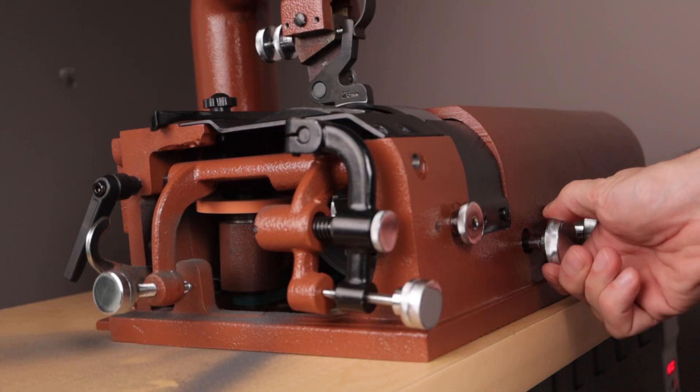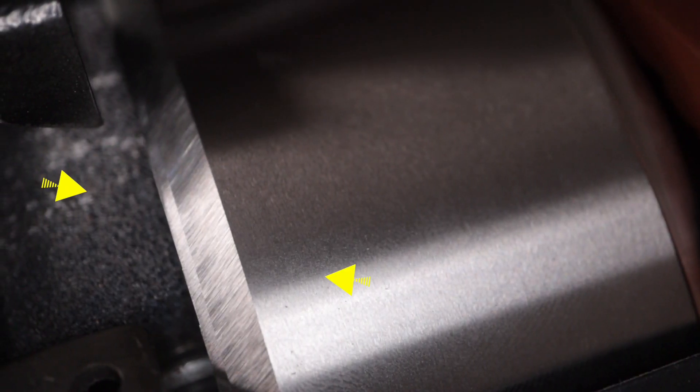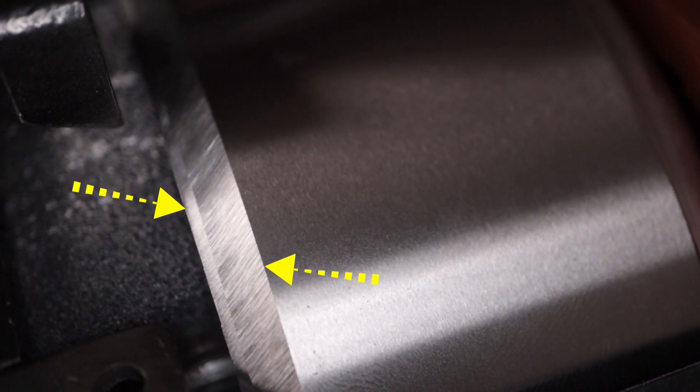Finally, back the sharpening stone away from the blade and you are all done. And there you have it—a perfect double beveled and freshly sharpened Skyver blade.